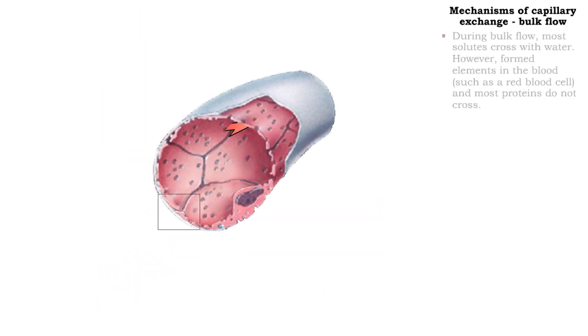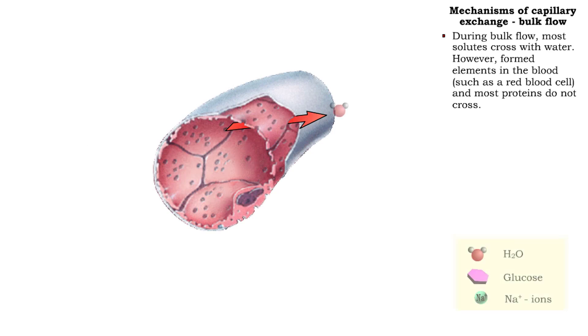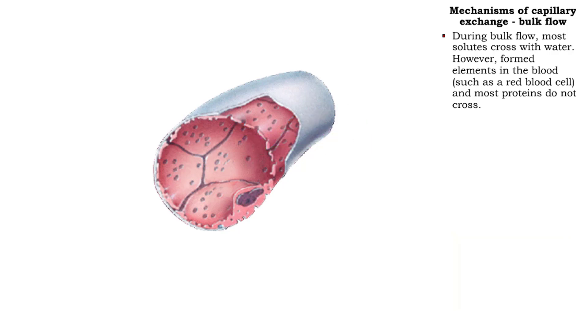Most solutes can cross with water. However, most larger proteins and formed elements in the blood, such as red blood cells, cannot pass through the fenestrations of the endothelial cell.